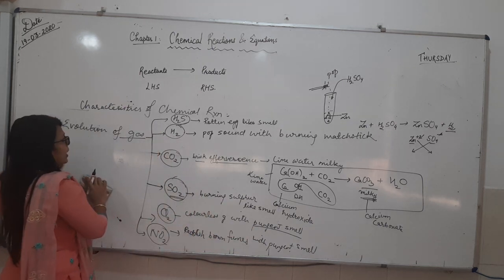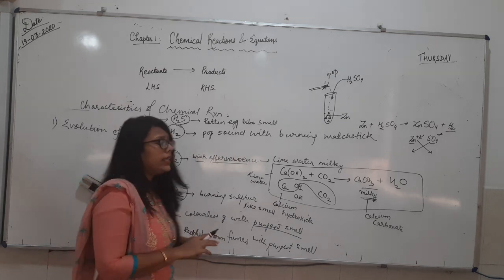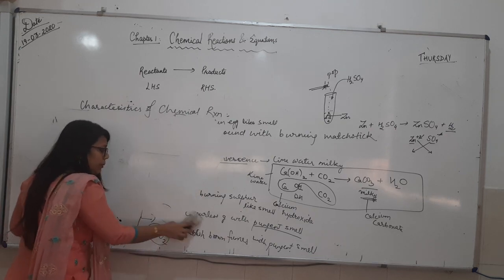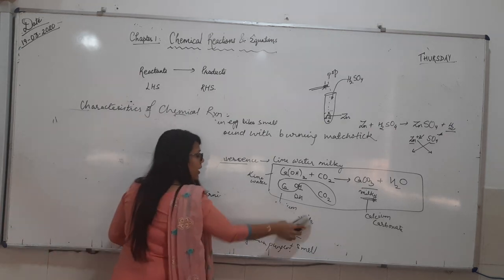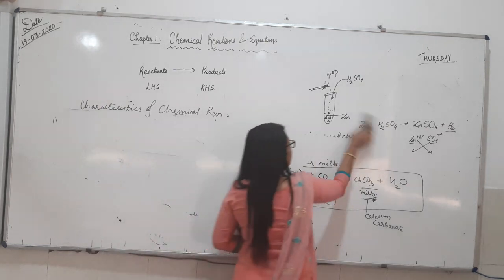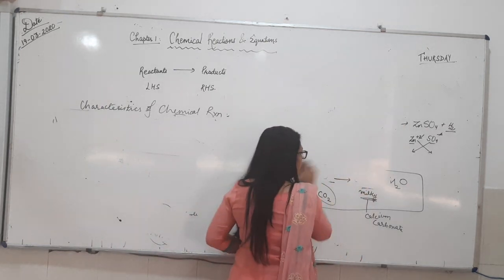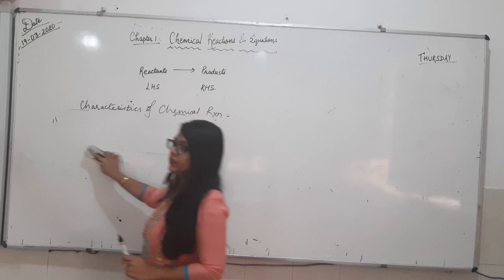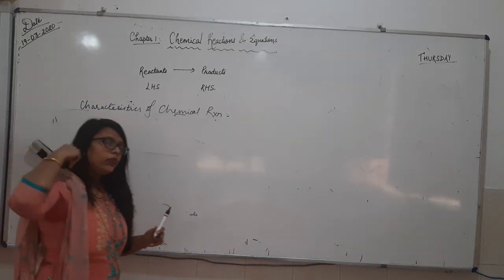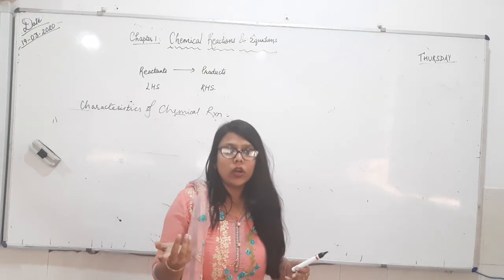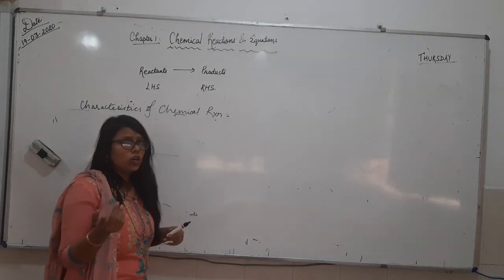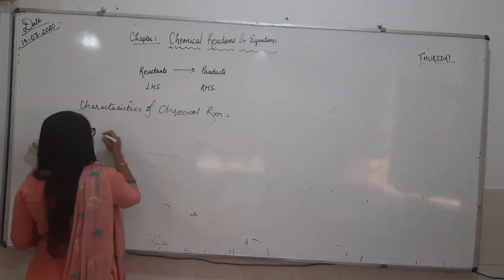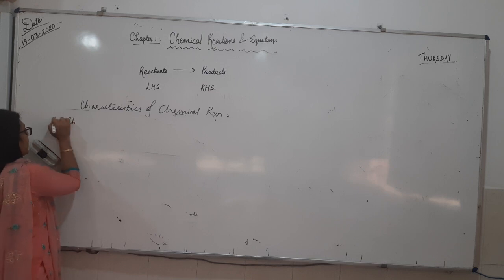This was the first characteristic of chemical reaction. To determine the chemical reaction, we can also use another characteristic — that is change in temperature. How can you determine the change in temperature? If I am having a test tube and undergoing the reaction, and the test tube becomes hot — that is the first condition. Or another condition: the test tube becomes cool or chill.